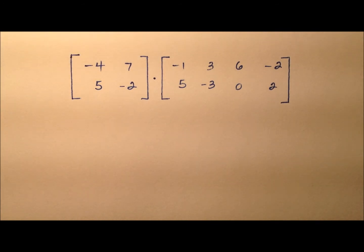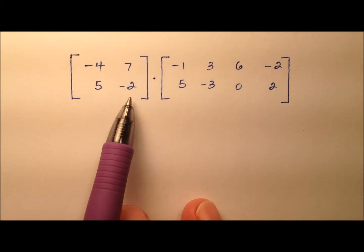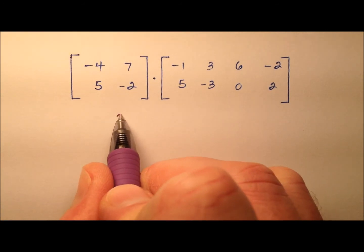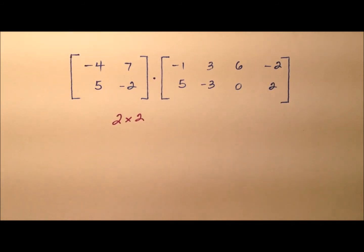Before we can get right into the multiplication, let's go ahead and take a quick inspection of the dimensions of each one of these matrices, just to make sure that the matrix multiplication is in fact defined. So in this first matrix, it looks like 2 rows, 2 columns, we said that's a square matrix, so this is going to be 2 by 2.